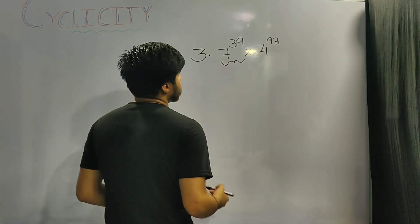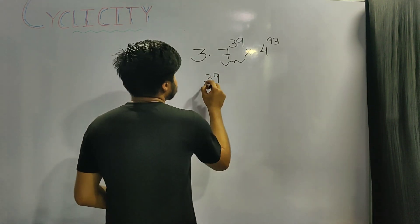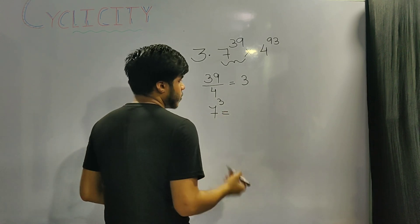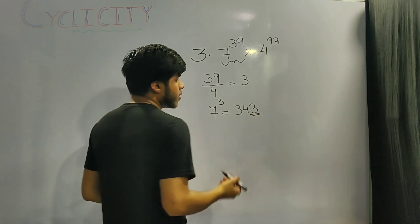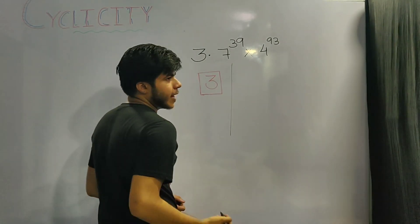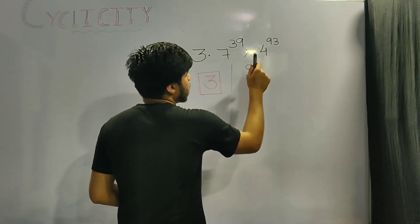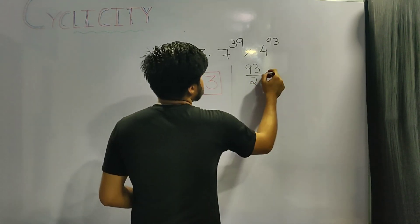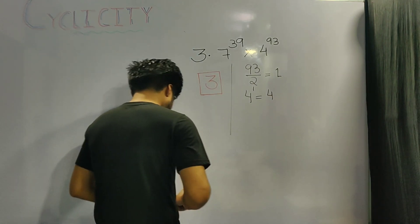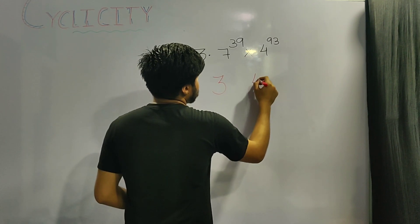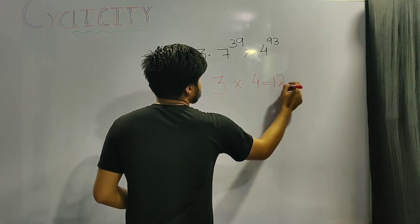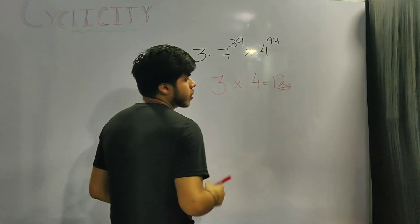For 7 raised to the power 39: divide 39 by the cyclicity of 7, which is 4 — remainder is 3. So the unit digit is that of 7 to the power 3, which is the unit digit of 343, giving us 3. For 4 raised to the power 93: divide 93 by the cyclicity of 4, which is 2 — remainder is 1. So the unit digit is 4 to the power 1, which is 4. Now we multiply the two unit digits: 3 times 4 equals 12, and the unit digit of 12 is 2. So our final answer is 2.